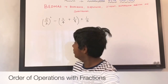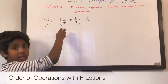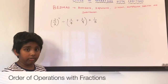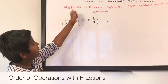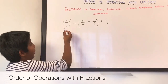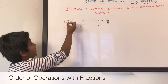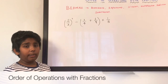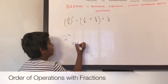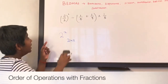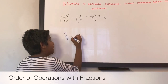Let's do the first question: 2 over 3 squared, divided by 1 over 4 plus 1 over 9, times 1 over 5. First, let's do the brackets, because B means we have to do brackets first. We have brackets here and here. So 2 over 3 squared means we have to do 2 over 3 times 2 over 3.